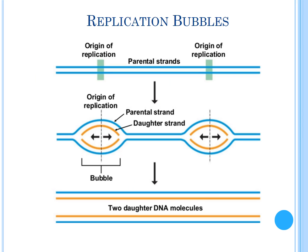Next we will learn about the replication bubble. DNA replication does not start randomly — there are fixed unique points called the origin of replication from where it starts. One DNA strand may have more than one origin of replication, as shown in the diagram. As replication starts from these points, unwinding of the DNA duplex begins, forming bubble-like structures at the origin of replication. These are called replication bubbles, and they grow in both directions, ultimately producing two DNA duplexes from one parental duplex.